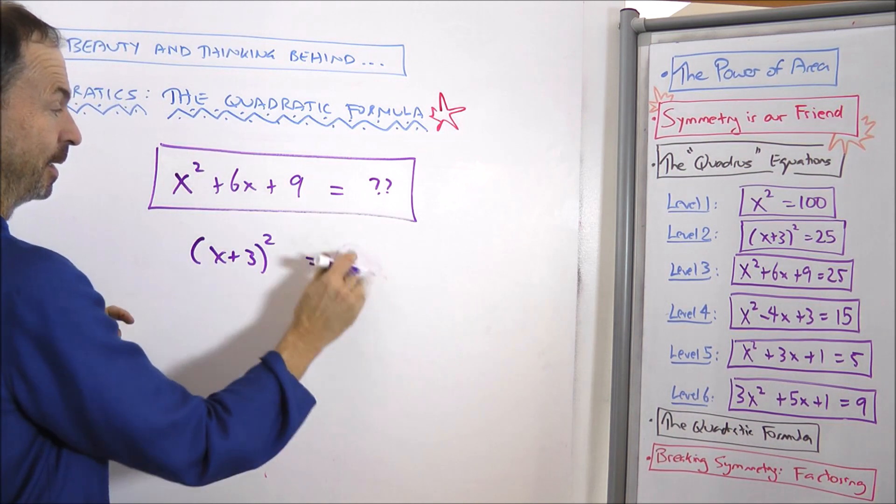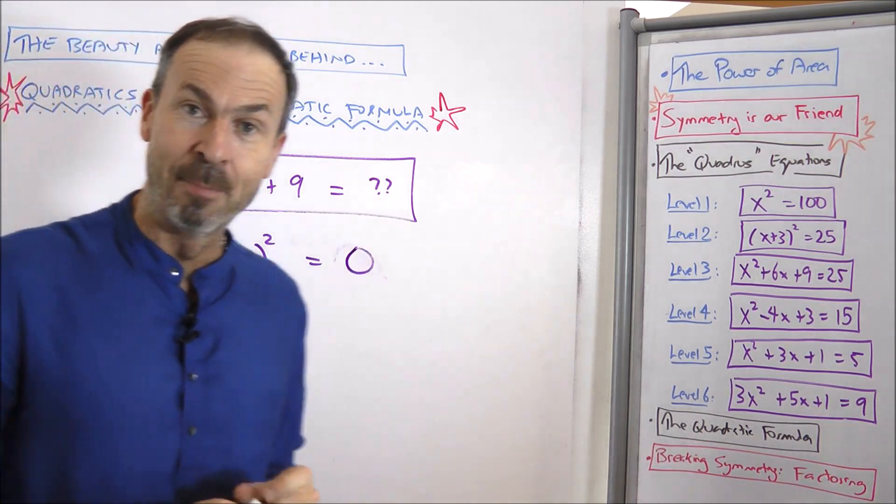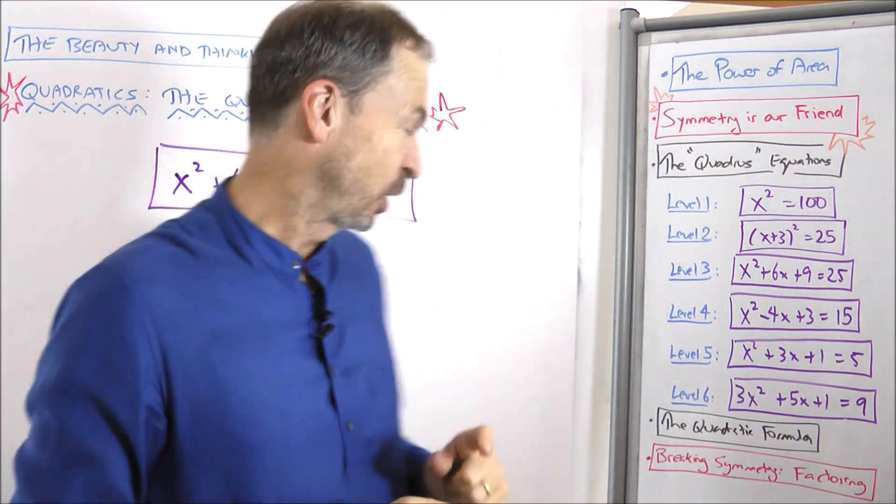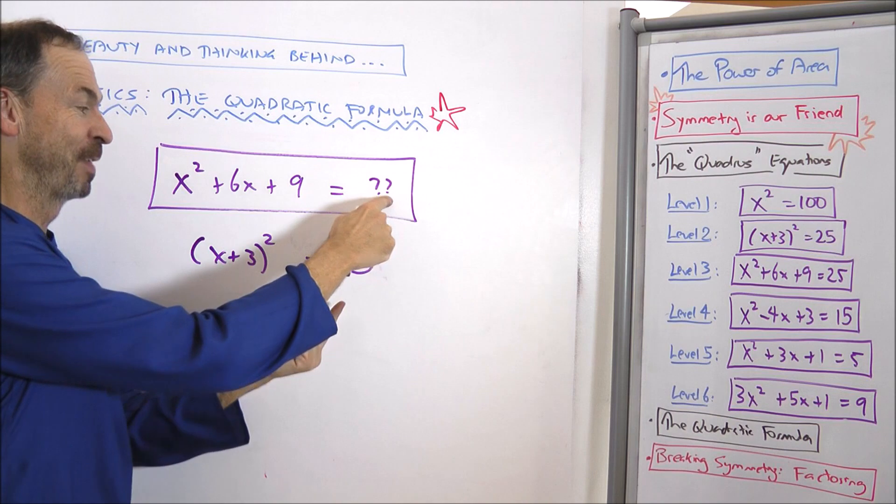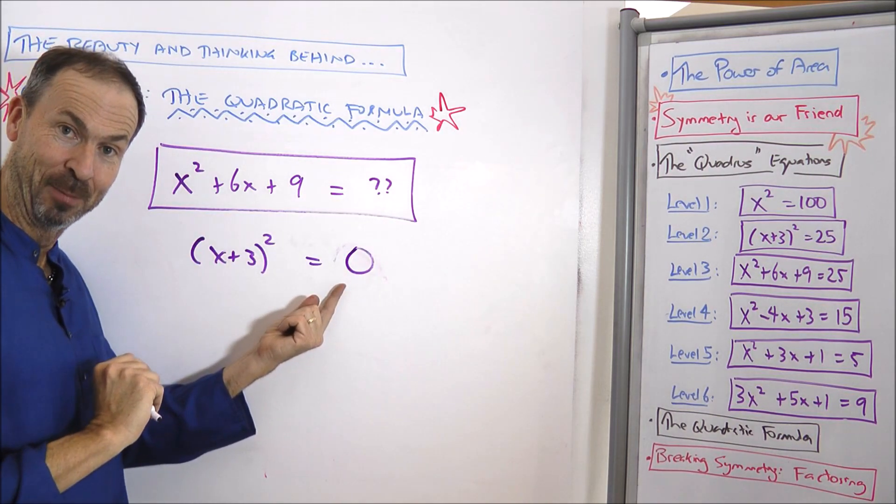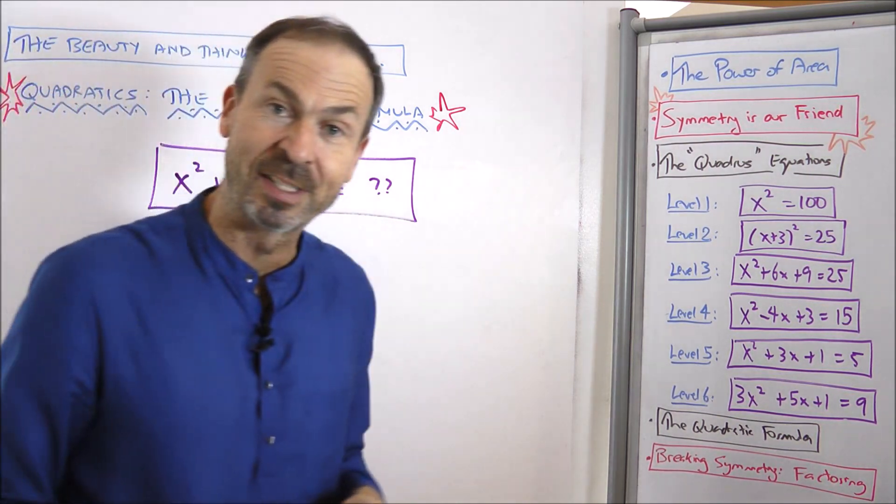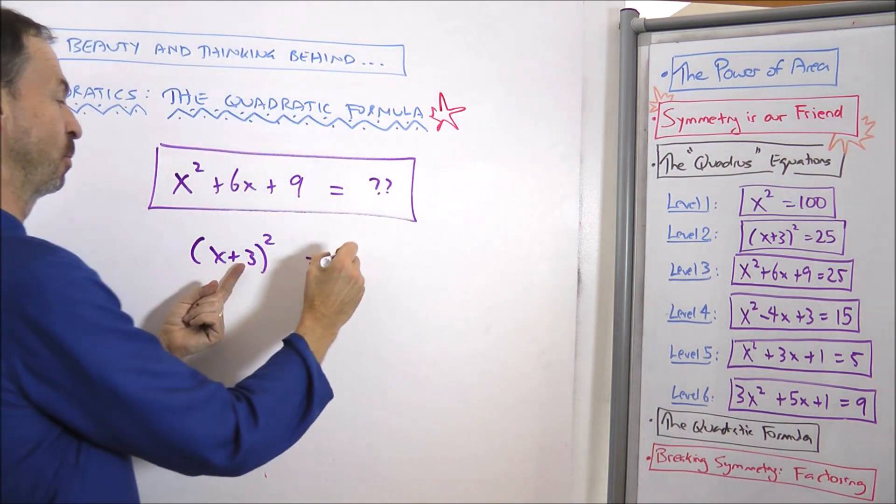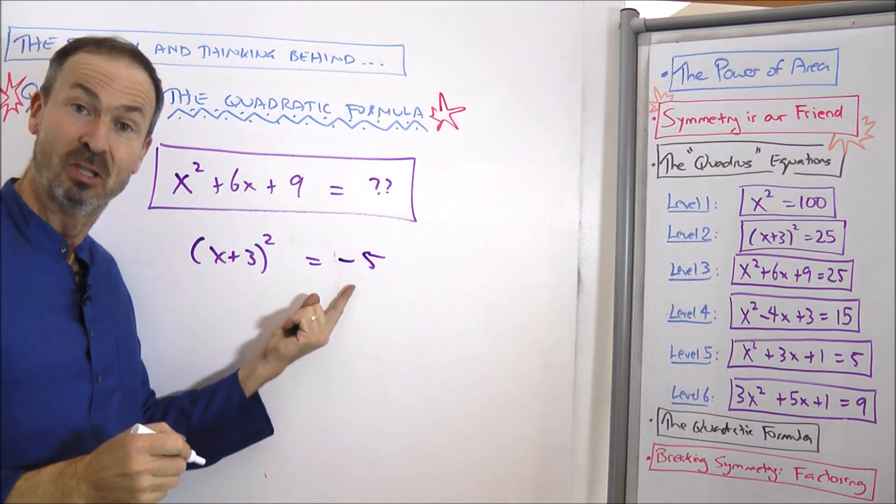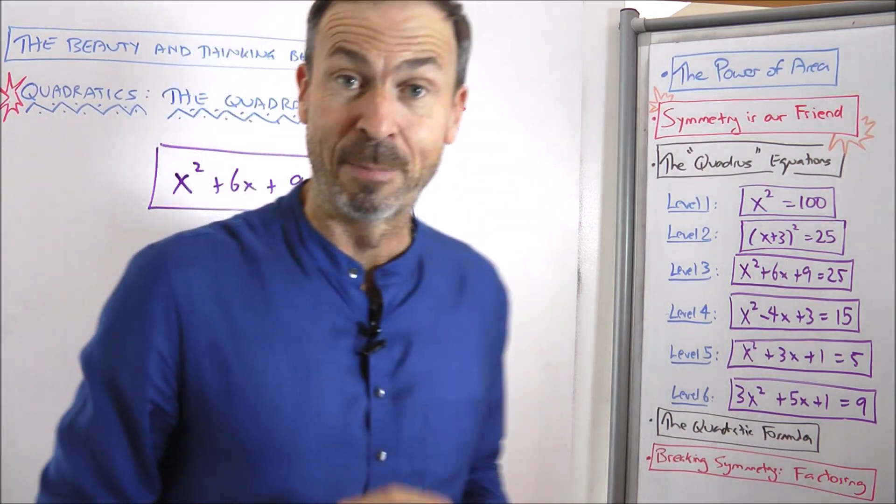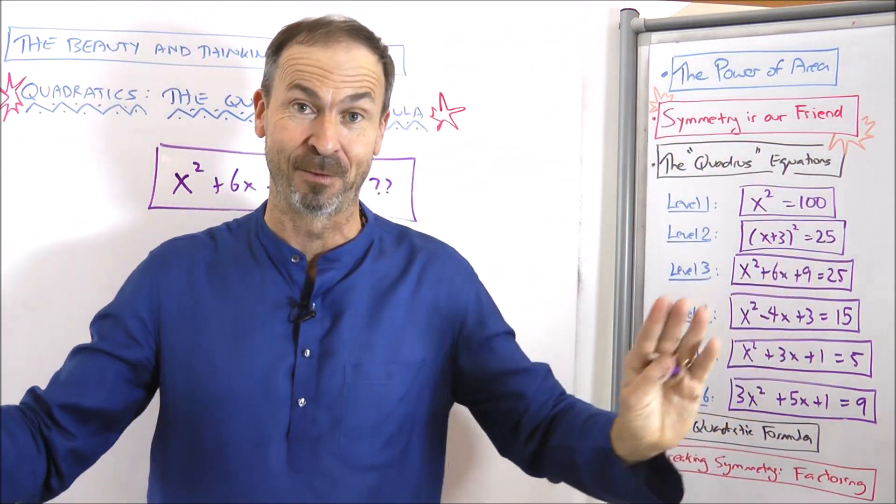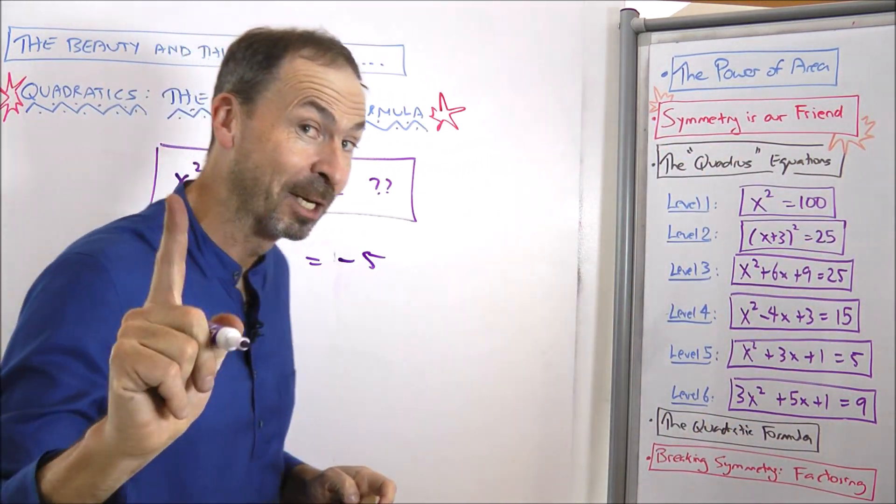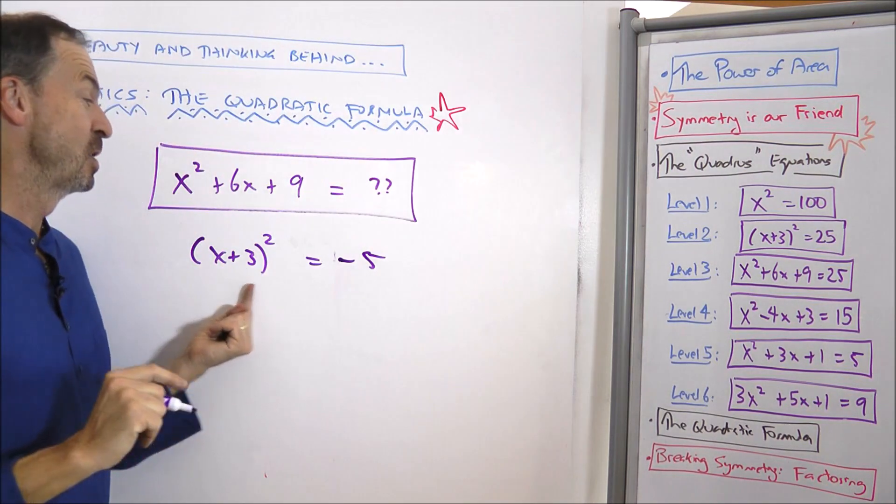Sometimes we get one answer, namely 0 is the only number with a single square root, in which case this quadratic equation with 0 there would have just one solution. And sometimes it's possible to have no solutions. For example, x plus 3 squared equals negative 5 clearly has no solutions, because we proved last time there is no number that multiplies by itself to be negative, because negative times negative is positive, in which case, no solutions.